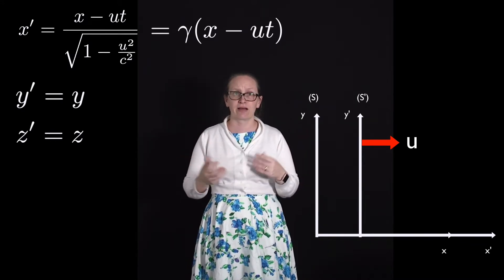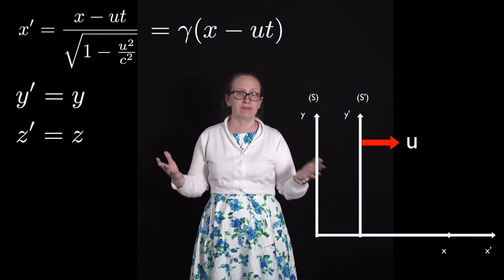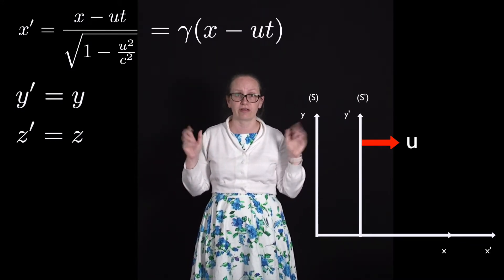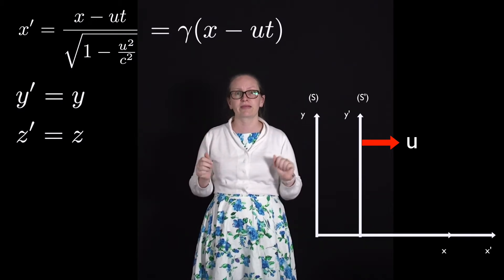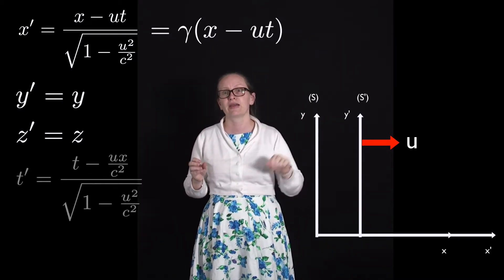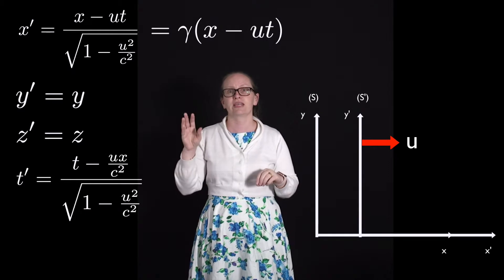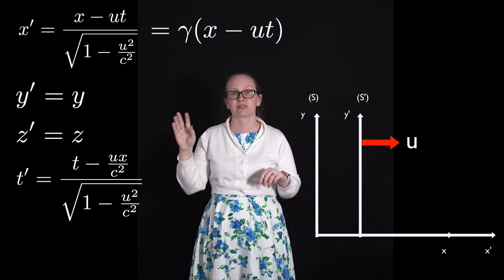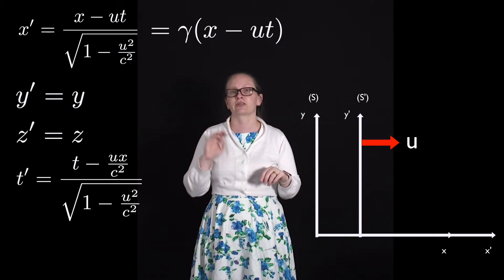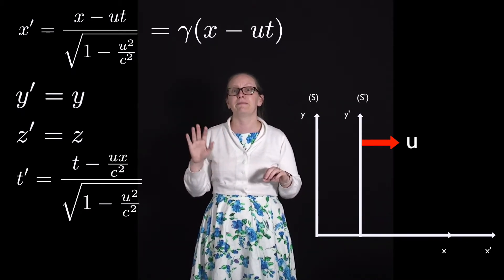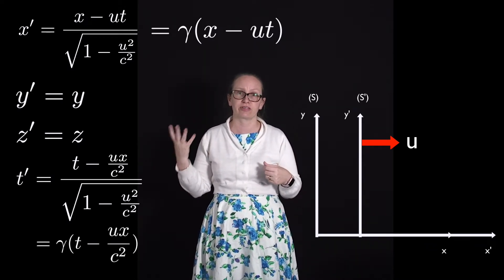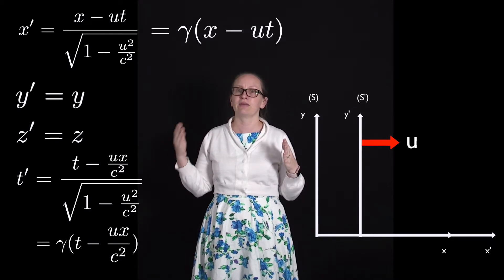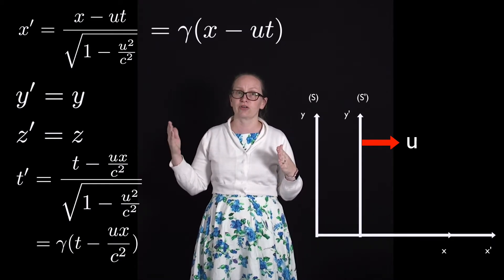The surprising outcome is that time is not the same in the two reference frames. The time transform can be written as T' is equal to T minus Ux over C squared, divided by the square root of 1 minus U squared over C squared, which using gamma we can write as T' equals gamma times (T minus Ux over C squared).